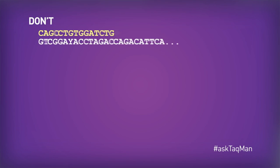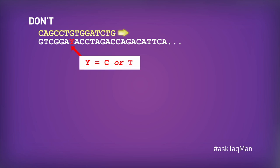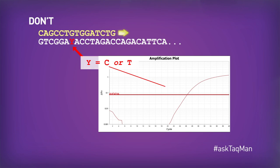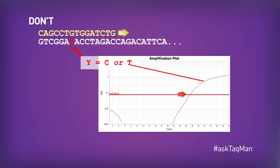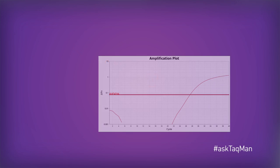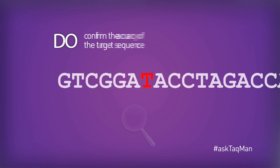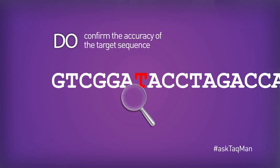Second, and this is critical for quantitative experiments, don't design oligos to a mismatch or to a known polymorphic site, as this might cause inefficient binding during the first few PCR cycles and shift CTs to the right. Instead, always confirm that you have the correct sequence.